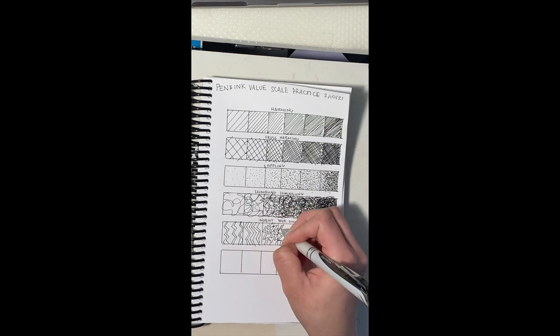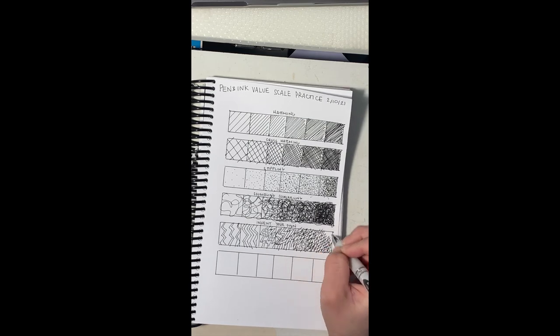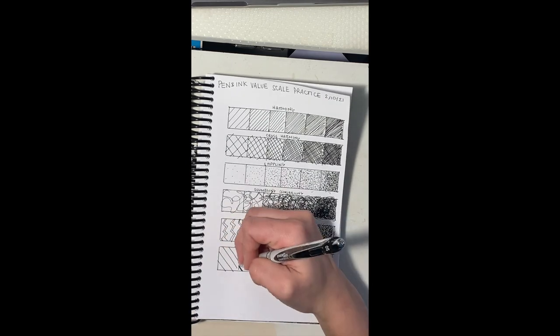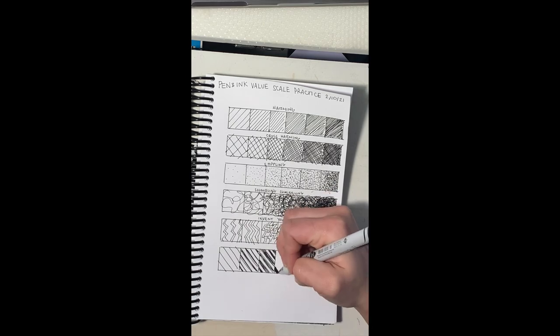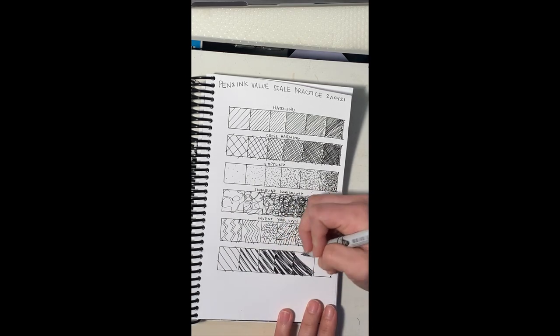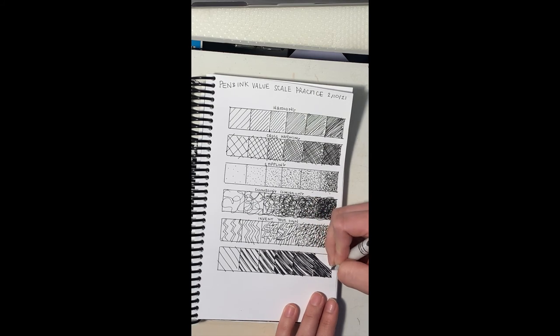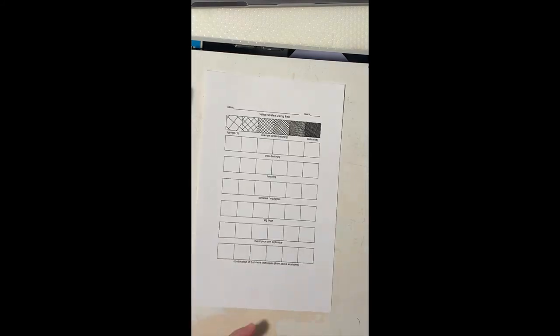And then for invent your own, I kind of just had fun. I did some weird zigzags. It's kind of messy. I wouldn't use it in a final project. And then for my last one, I chose to do some weighted line differences, which again is kind of messy. I like to stick to the traditional ones.